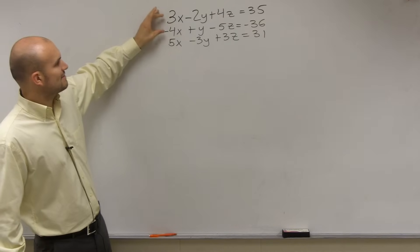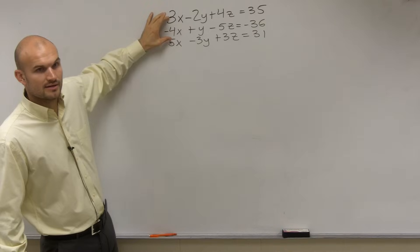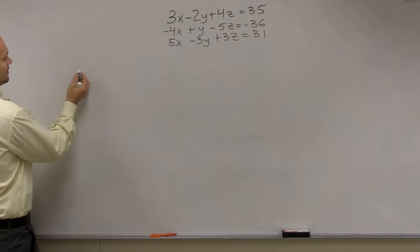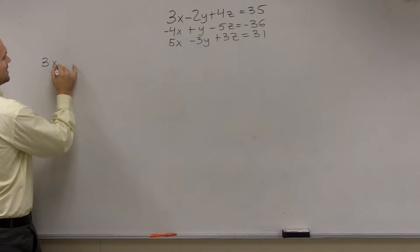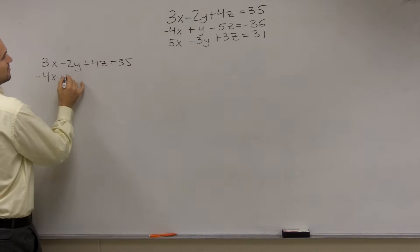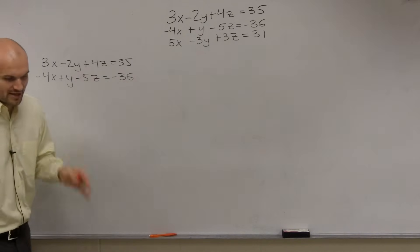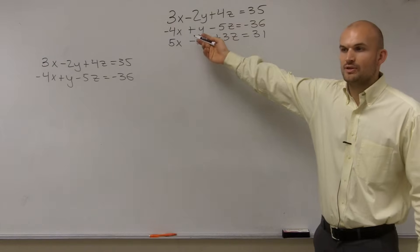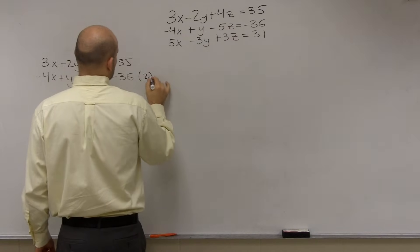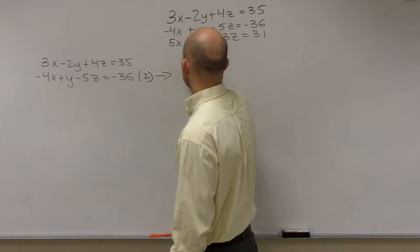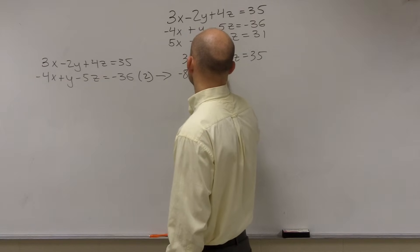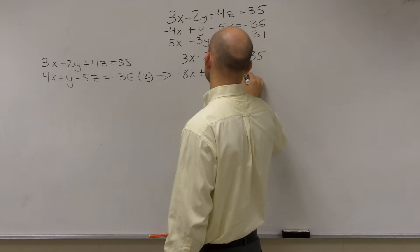If you wanted to eliminate x, you'd have to multiply both equations by a factor. So I'm going to do a set of two systems of equations. I'll take 3x minus 2y plus 4z equals 35, and negative 4x plus y minus 5z equals negative 36. I multiply that second equation by 2, so I obtain 3x minus 2y plus 4z equals 35, and negative 8x plus 2y minus 10z equals negative 72.